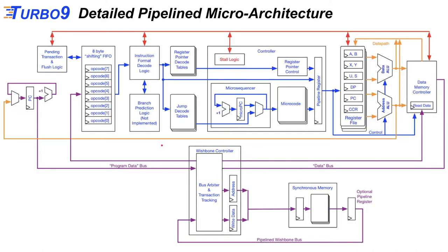Here's the detailed pipeline microarchitecture. We have the data bus and the program bus as before, and the external shared bus. In orange we have the data path — the operands and data being processed. In blue we have the control — all the control vectors that eventually manipulate the data path. In red we have stall logic. This is a pipelined implementation with separate stages, and when one stage isn't ready, we need to stall the appropriate stages so they can catch up.